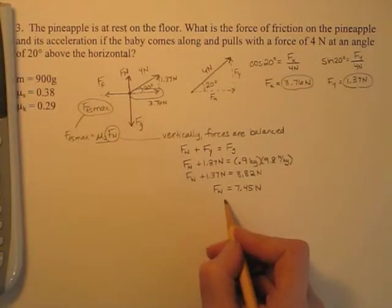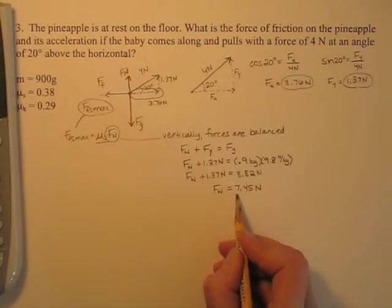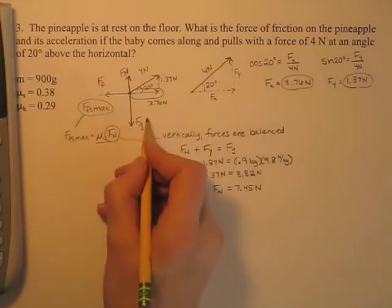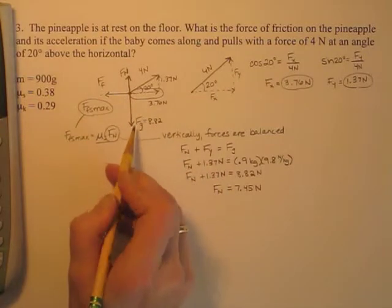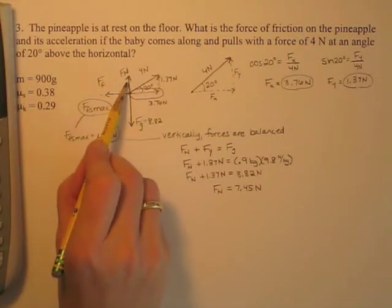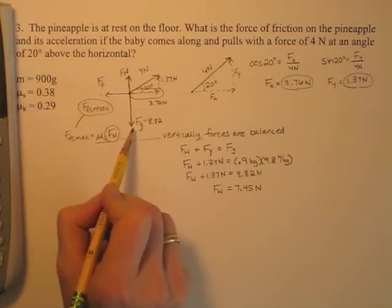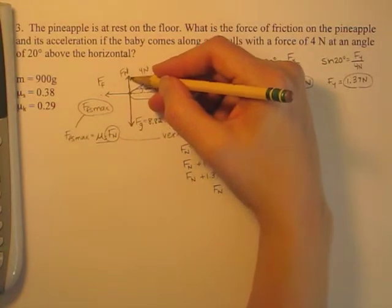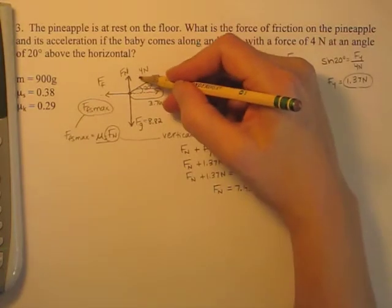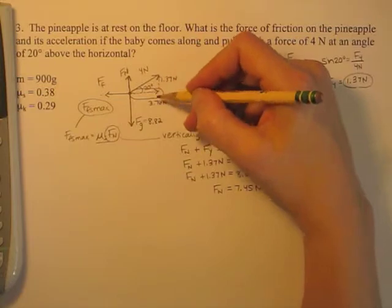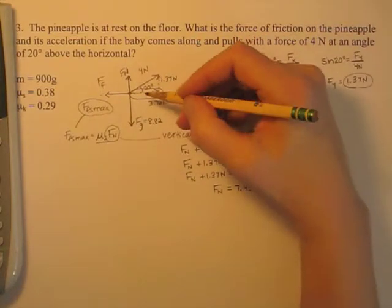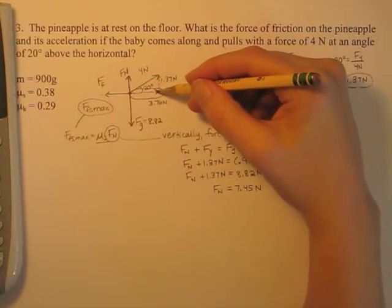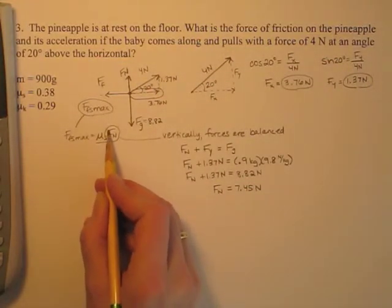Let's stop and think about whether this makes sense. Does it make sense for the normal force to be 7.45? Yes — the force of gravity is 8.82 and the baby's upward component is 1.37. The normal force plus that upward component must equal gravity. Because the baby is pulling upward, that reduces how much the pineapple presses against the floor, which in turn reduces the friction force. The friction force depends on how pressed together those surfaces are.